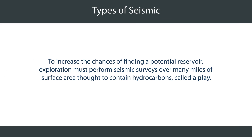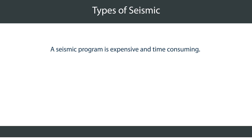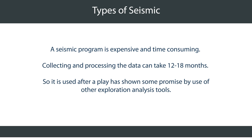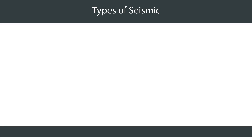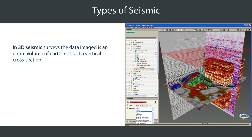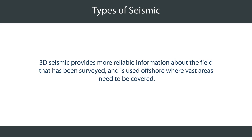To increase the chances of finding a potential reservoir, exploration must perform seismic surveys over many miles of surface area thought to contain hydrocarbons, called a play. A seismic program is expensive and time-consuming; collecting and processing the data can take 12 to 18 months, so it is used after a play has shown some promise by use of other exploration analysis tools. The two types of seismic used in exploration are: 2D seismic, recorded using straight lines of receivers across the surface of the earth; and 3D seismic, where the data imaged is an entire volume of earth, not just a vertical cross-section. 3D seismic provides more reliable information about the field surveyed and is used offshore where vast areas need to be covered.